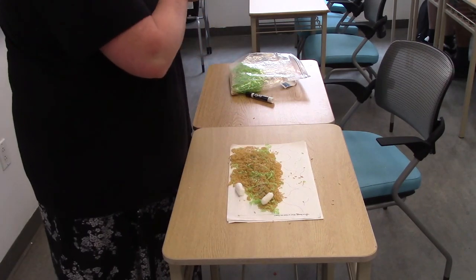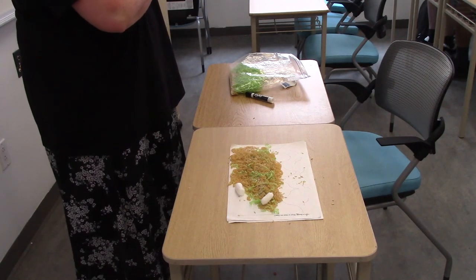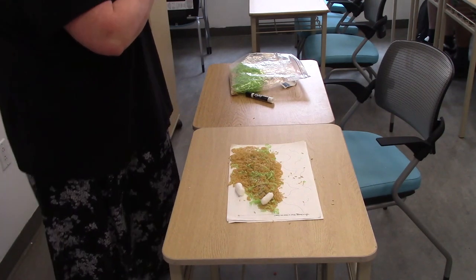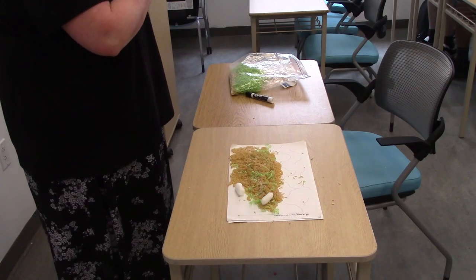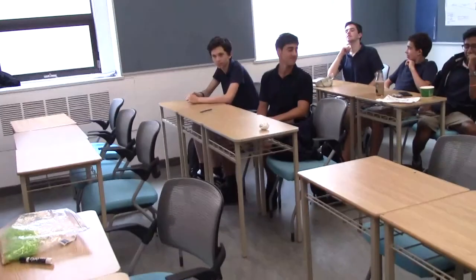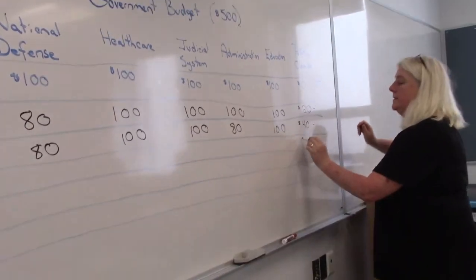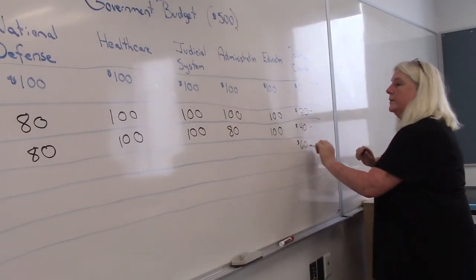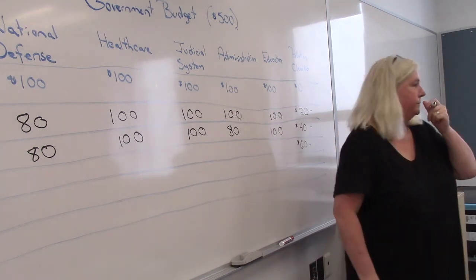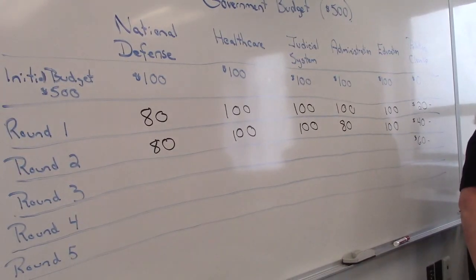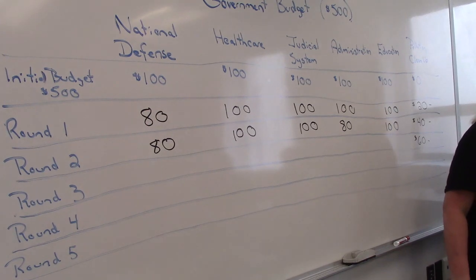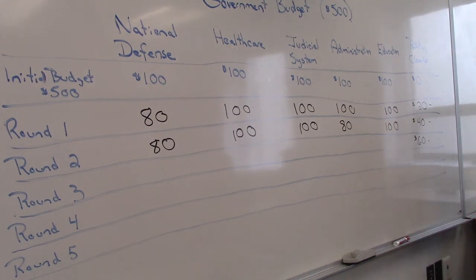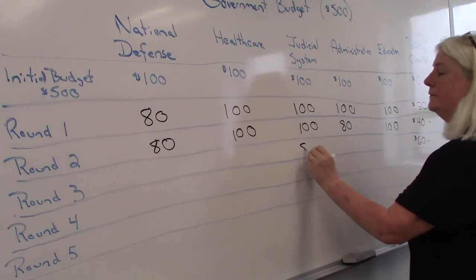Do we want to hire another worker? Yes. So we're now allocating $60 to the pollution cleanup. Where are we going to take it from? $20 has to come from some budget. Judicial system. Any opposition? So the judicial system falls to $80.